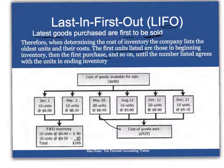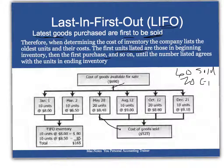So again, if we have 80 units, 60 were sold and 20 are in ending inventory, with a total value of $690. Under LIFO, the most recently purchased units were sold — December, October, August, May — and what's remaining are the 10 we had at the beginning plus the 10 purchased in March.